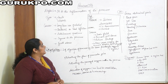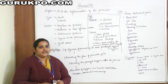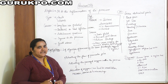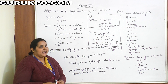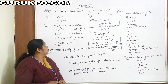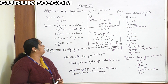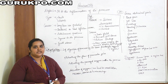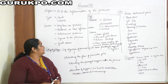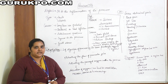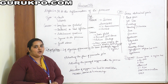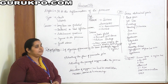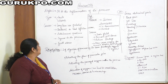Pancreatitis is defined as the inflammation of the pancreas. It is of two types: acute and chronic. Acute is the sudden onset of infection. Chronic is when the patient suffers repeated episodes or the condition lasts for a long period of time — that is termed as chronic pancreatitis.